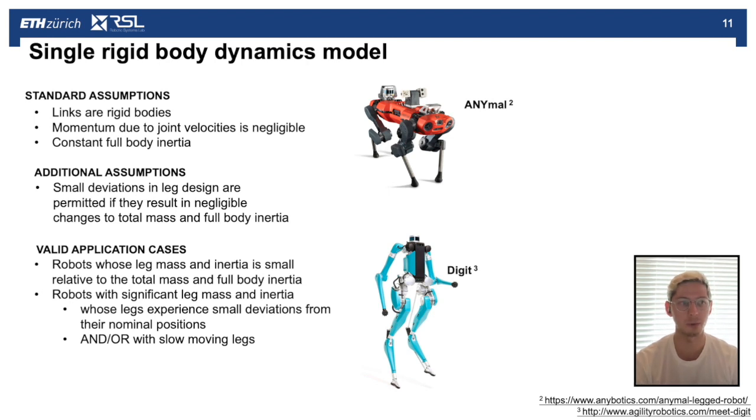Also, this framework is valid for robots with significant leg mass and inertia but whose legs experience small deviation from their nominal positions and/or with very slow moving legs. So this could extend the framework to be applicable to humanoid robots like Digit, for example, for certain motions.